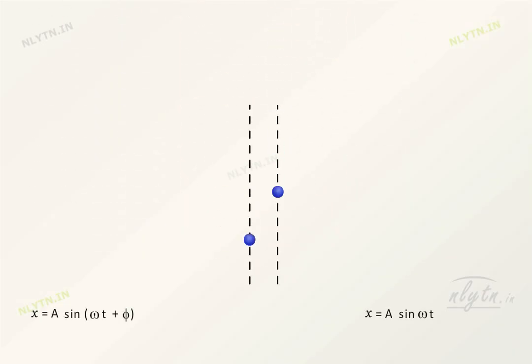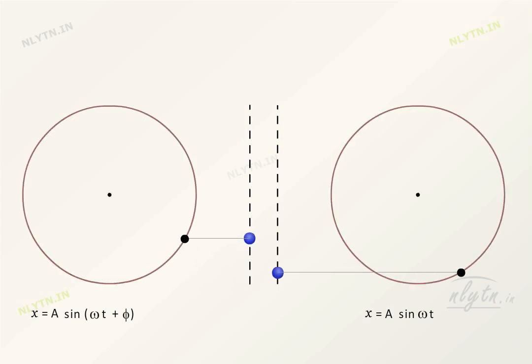When we say that two simple harmonic motions have a phase difference of phi, this means that their corresponding circular motions are separated by the initial angle phi. For the phase difference of phi by 2, the situation is as shown. If one SHM starts from the mean position, then the other SHM which is ahead by a phase of phi by 2 will start from the extreme position.